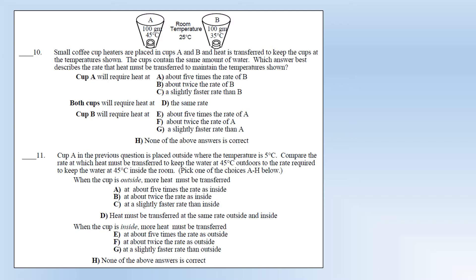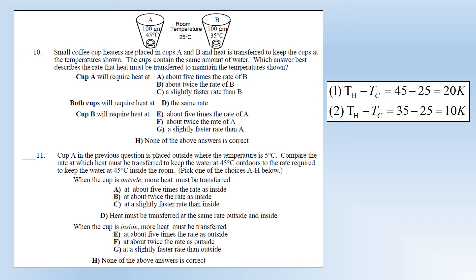Now a different scenario: two small coffee cup heaters used to keep temperatures constant, both cups with the same amount of water - 100 grams. The key is the temperature difference. For cup A the temperature difference to the surroundings is 20 Kelvin; for cup B it's 10 Kelvin. The rate at which heat energy is lost to the surroundings will be twice as big in cup A, so we'll have to supply twice as much energy to cup A.